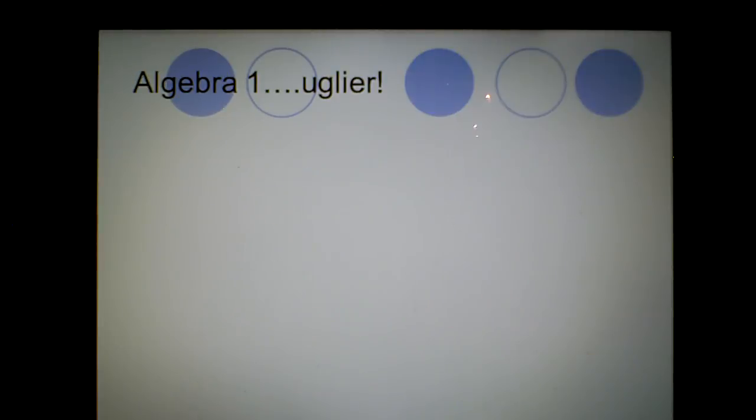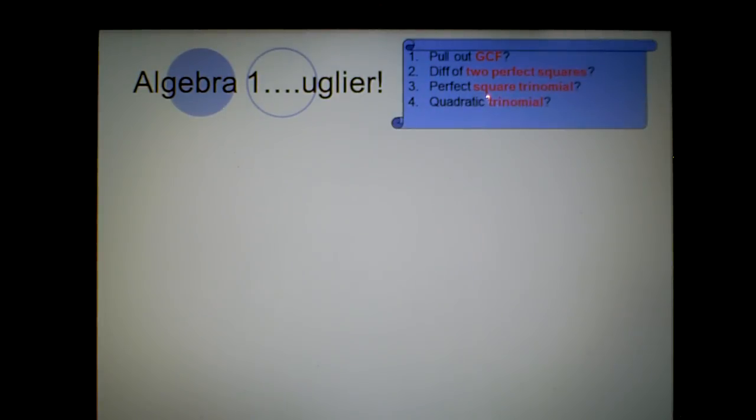All right, so more factoring. So, Algebra 1, just uglier. So, I have my same rules, right? I always look to pull out the greatest common factor. I always try to see if I have the difference. If I have two terms, is it the difference of two perfect squares? Maybe pull out a greatest common factor and then I have two perfect squares. Do I have a perfect square trinomial? And, of course, trinomial means I have three terms. Or a quadratic, regular quadratic trinomial. There is going to be a number five, but not until later.